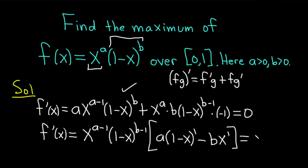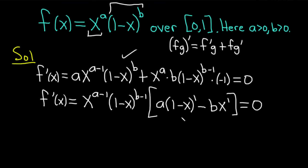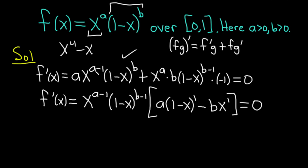This is a little harder for people because it has variables, but this factoring trick is something you've always known. If you have x^4 minus x^2, you factor out x^2 — the one with the smaller exponent. It's the same thing here; it just seems harder because the exponents are variables.